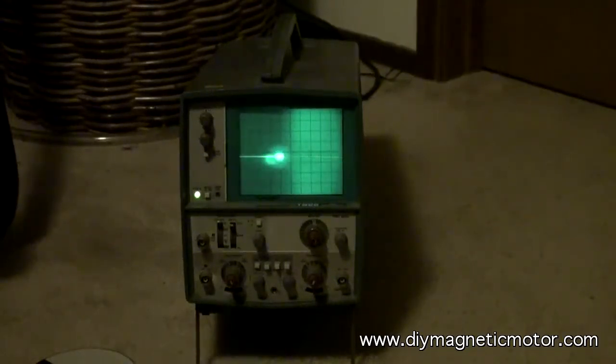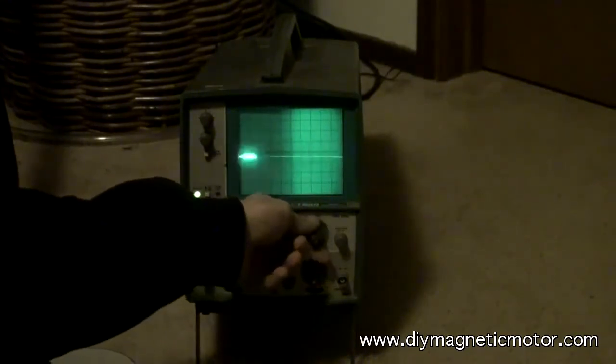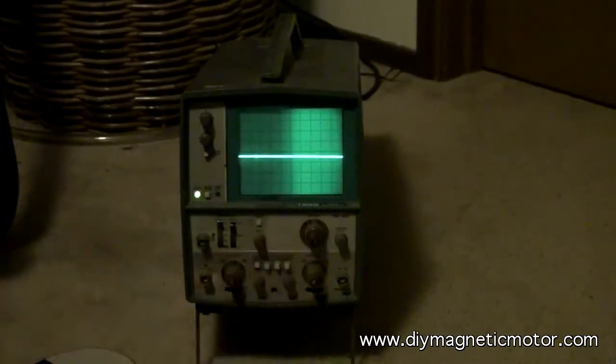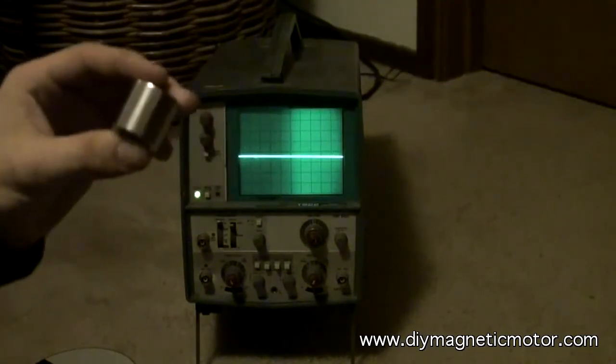This is my oscilloscope with no leads and no signal generator. We're going to be looking at a nice flat line, just like everybody looks at their magnets, with a nice flat line.